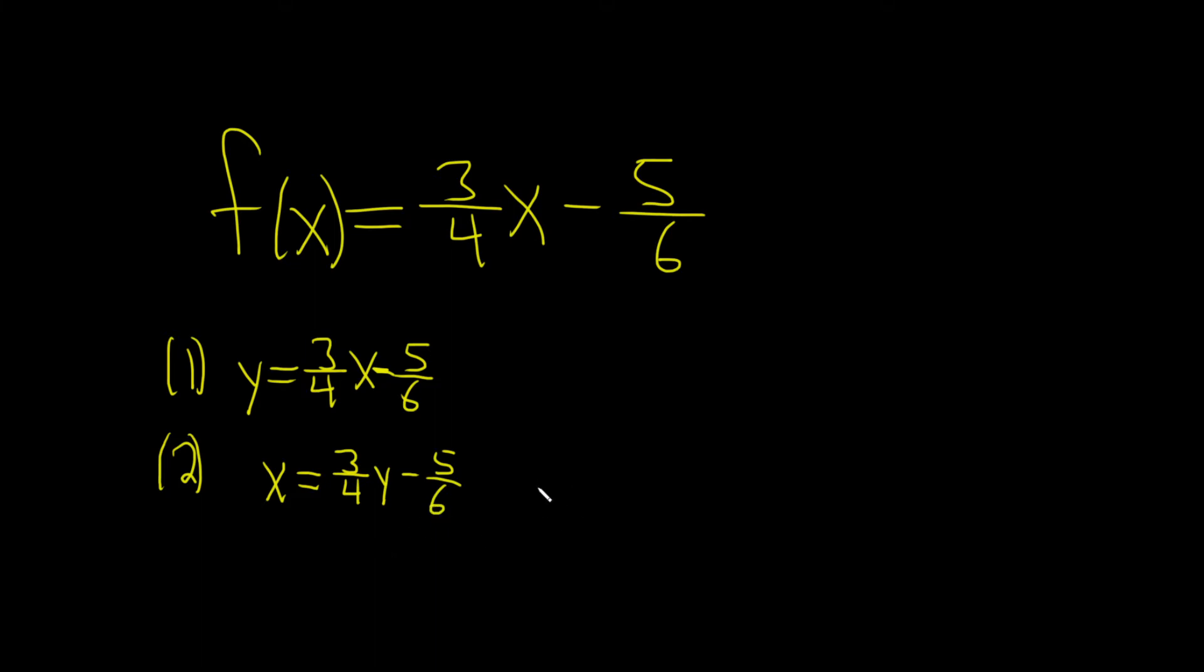And the third step is the hardest step usually. You have to solve for y. So we want to isolate this term here. So we'll start by adding 5 over 6 to both sides like this.